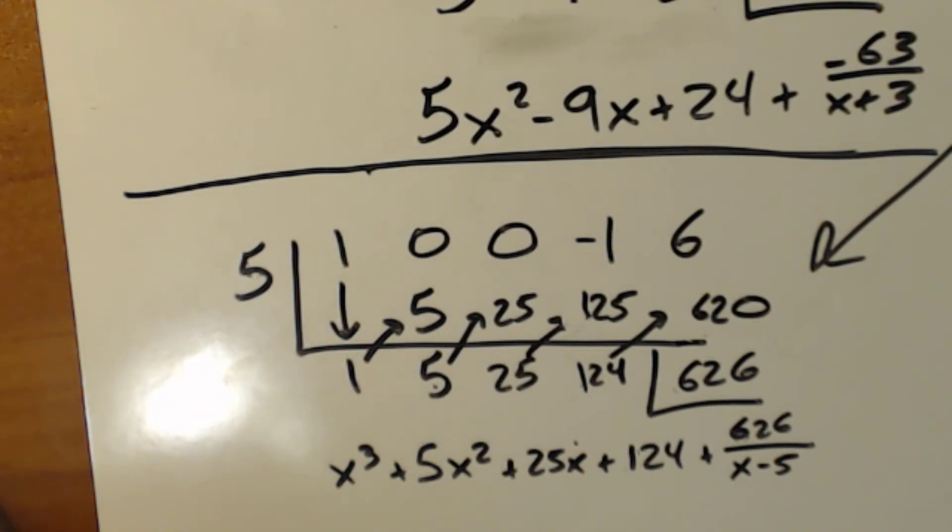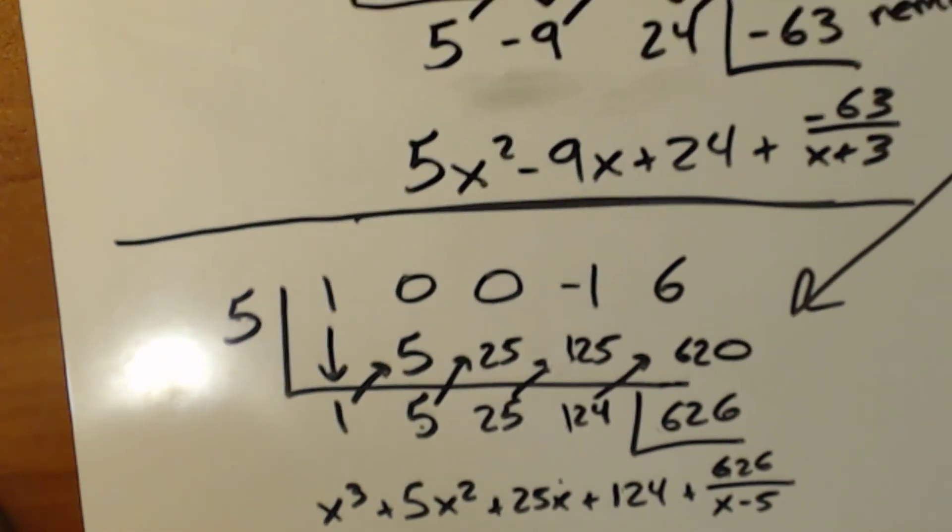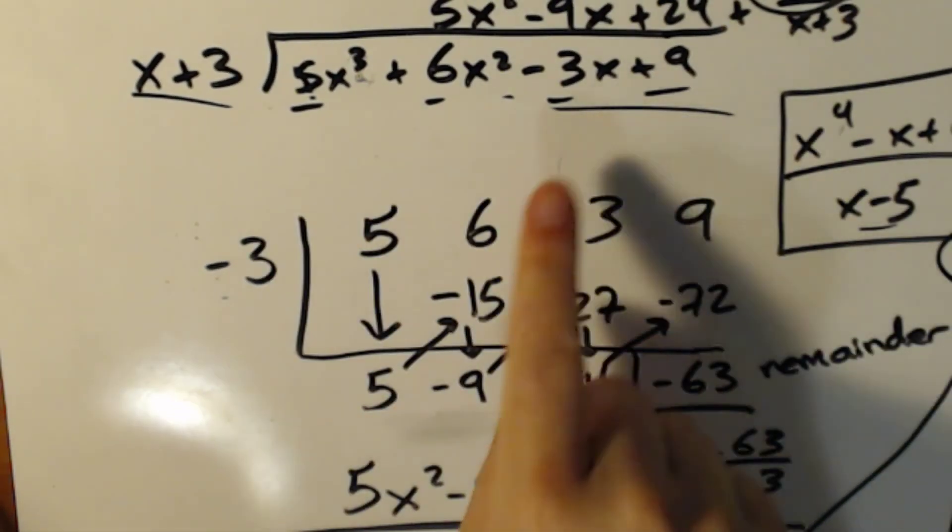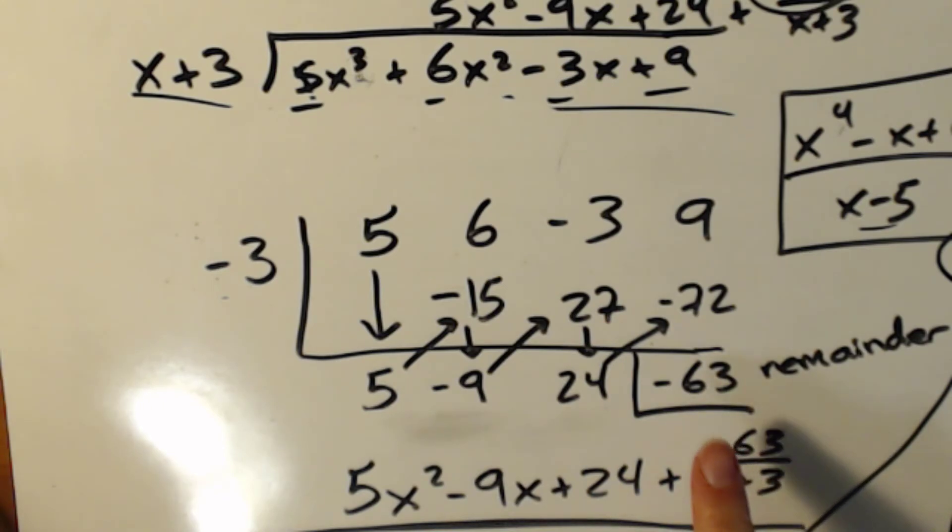If you go to Khan Academy, there is a video that connects long division and synthetic division so that you can really, really understand why everything is what it is. You probably got sort of a feel for that when we did this by long division and then we did it by synthetic division because we ended up with like all the same numbers, right, that we were adding and subtracting.